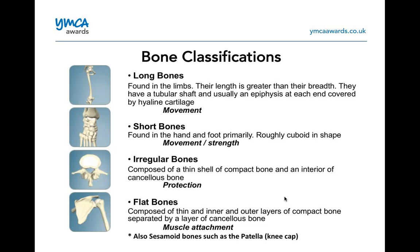Short bones are found mainly in the hands and feet and are roughly cuboid in shape. Irregular bones are found in your vertebrae — the spinal column. They're composed of a thin shell of compact bone with an interior of cancellous bone, and they provide protection of the spinal cord. Flat bones — like the scapula — are composed of thin inner and outer layers of compact bone separated by a layer of cancellous bone, and they're really good for muscle attachment.